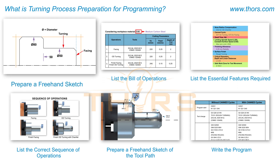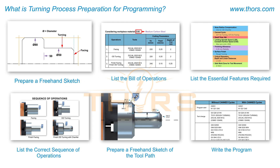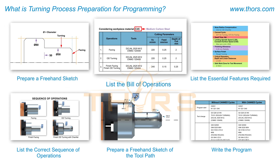Step 1: Prepare a freehand sketch of the workpiece and mark the area to be machined. Step 2: List the bill of operations, including the suitable cutting tools and cutting parameters.